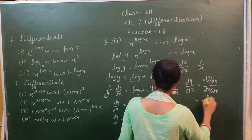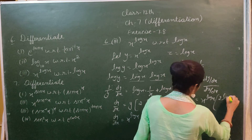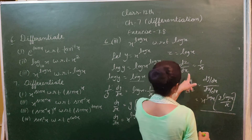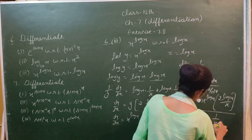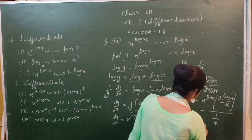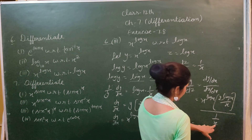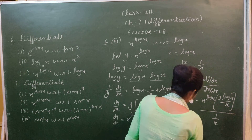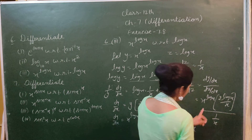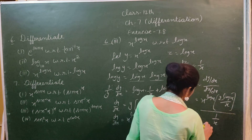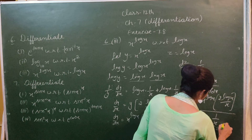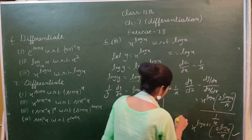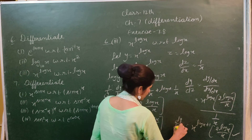Now dy/dz = (dy/dx) divided by (dz/dx) = x^(log x) times (2 log x / x) divided by (1/x). This simplifies to x^(log x) times 2 log x. The final answer can also be written as x^(log x + 1) times 2 log x.